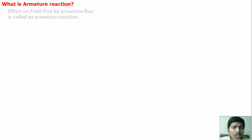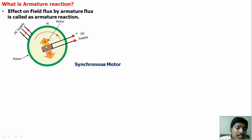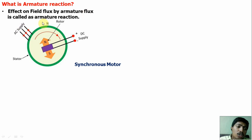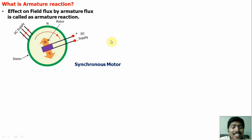Armature reaction means the effect on field flux by armature flux — that effect is called armature reaction. We know that in a synchronous machine, DC supply is given to the rotor side, so DC field flux is produced. In the stator side, three-phase AC supply is given, producing armature flux. The effect of the main field flux being disturbed by armature flux is called armature reaction.